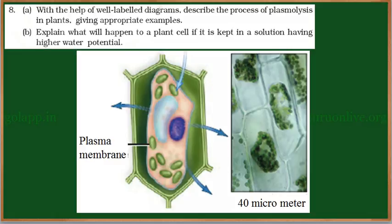With the help of well-labeled diagrams, describe the process of plasmolysis in plants and give appropriate examples. Explain what will happen to a plant cell if it is kept in a solution having high water potential.